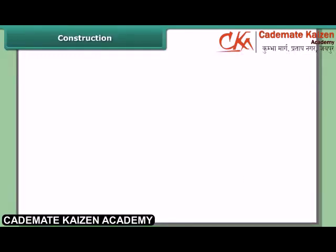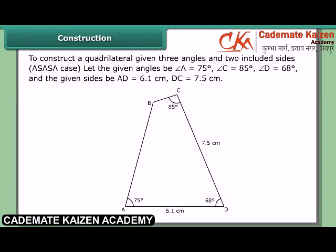To construct a quadrilateral given three angles and two included sides — the ASASA case. Let the given angles be angle A = 75°, angle C = 85°, angle D = 68°, and the given sides BA = 6.1 cm and DC = 7.5 cm. In this case, we can construct the quadrilateral directly without dividing it into two triangles.